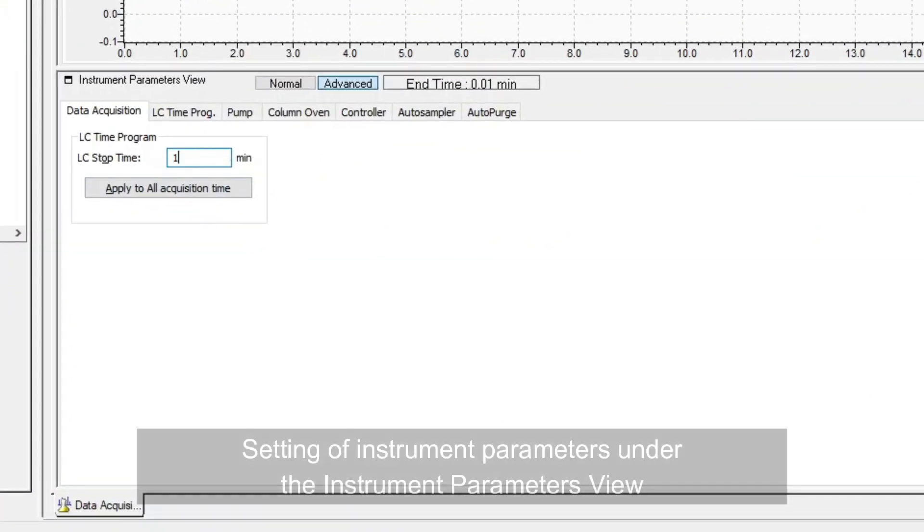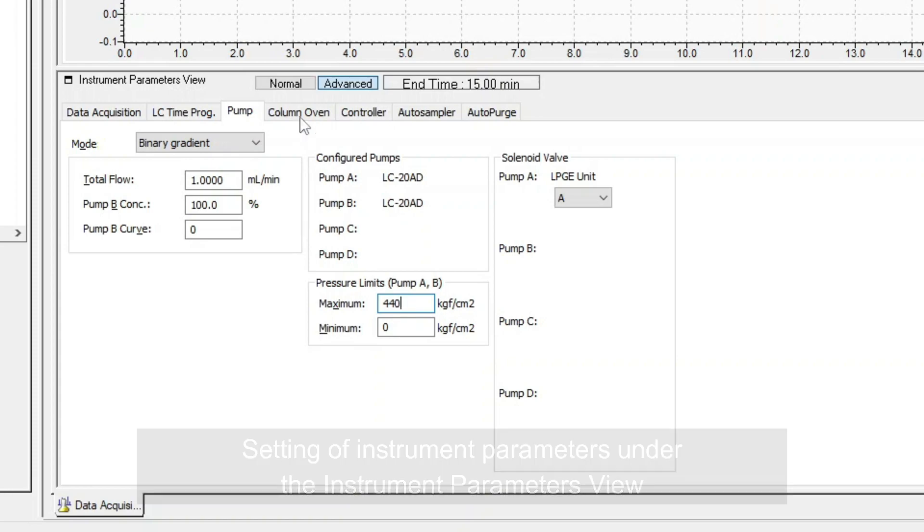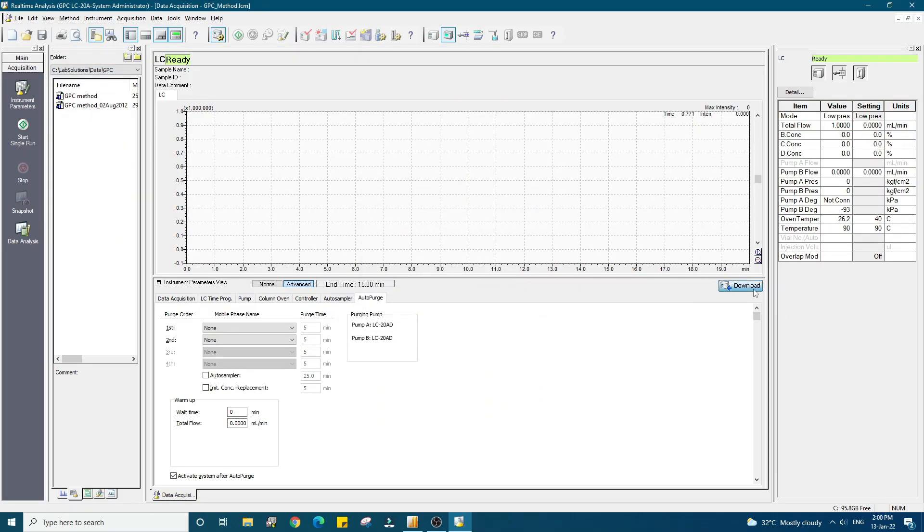Under the instrument parameters view, set the parameters of each component one by one to create a GPC method file. Save the method file and then download the parameters.